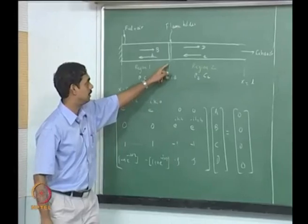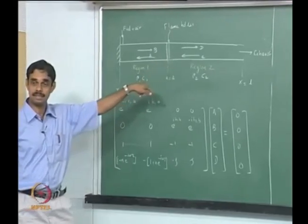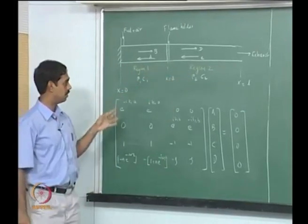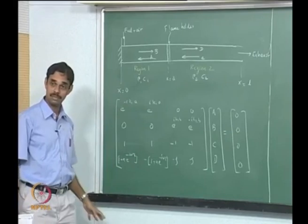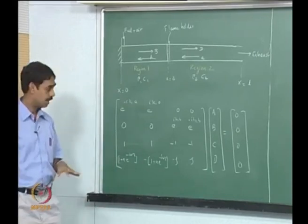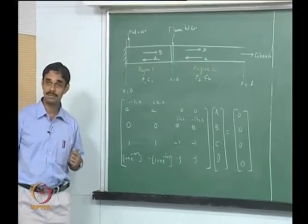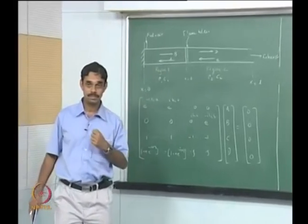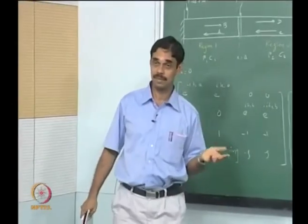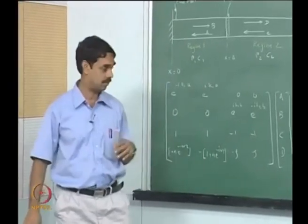Then we did something extra: at this flame we applied the jump condition that pressure is continuous but velocity jumps. We got 4 equations and 5 unknowns, and we discussed why this is okay. One unknown is omega itself that we are solving for — so we have an eigenvalue problem and get a dispersion relation to solve for the eigenvalue.